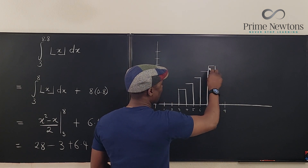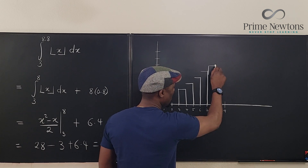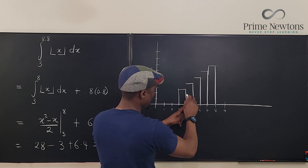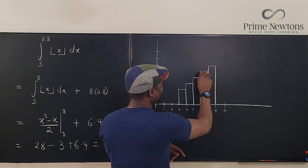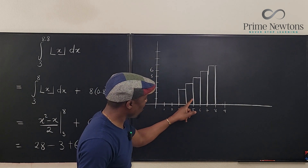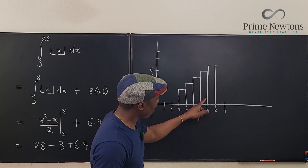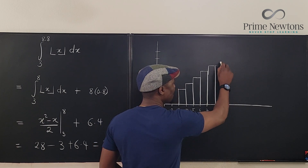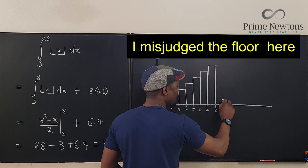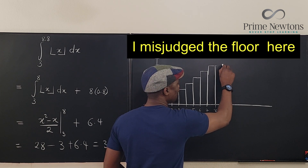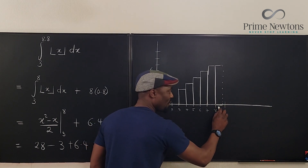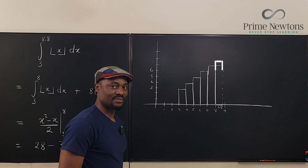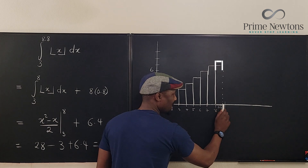So this is a rectangle where the floor goes at height 8, but the width is only 0.8, not a full unit. The floor of all values between 8 and 9 is just 8. So every time you get a non-integer upper limit, the last rectangle is incomplete — its width is the decimal part and its height is the floor value.